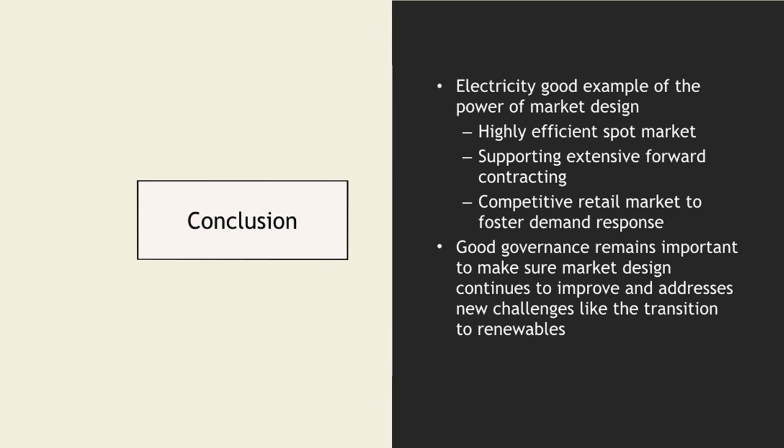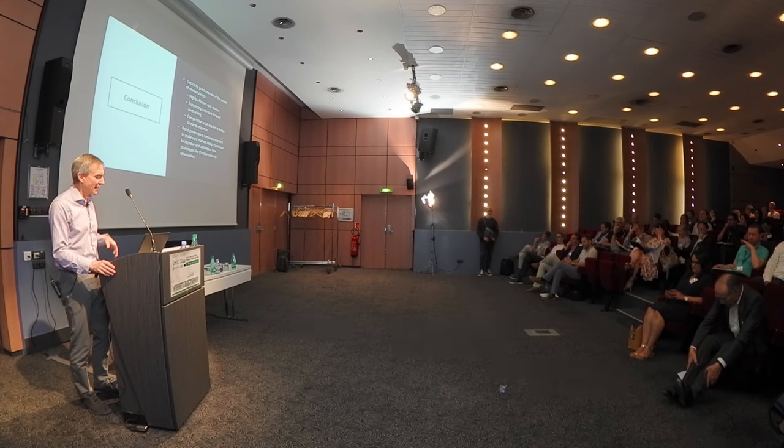Let me conclude. Electricity market design is a very good example of market design — it's a market where you have to get it right or the lights go out. We've had a lot of development, and the best markets are running very well, especially the spot markets — highly efficient. We have lots of forward contracting, which is wonderful, and competitive retail markets, which have been difficult but are getting better and will enable extensive demand response in time. Getting smart home technologies into homes is very difficult. Good governance is incredibly helpful in making sure you move towards a better path — markets are often captured by intermediaries making money from the inefficiencies of the status quo.